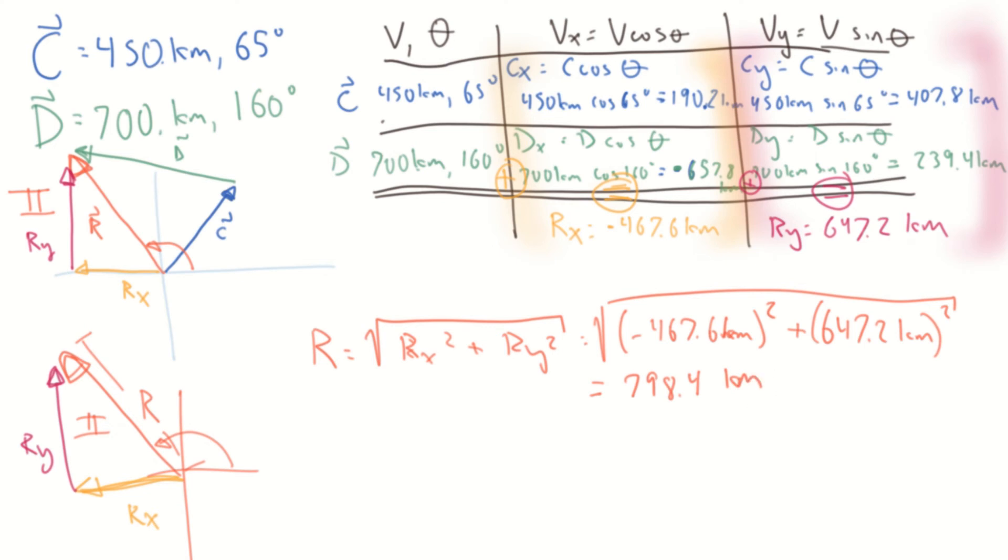When I solve this out, I get an answer for R of 798.4 kilometers. So my sketch looks like it was a little bit off. Well, maybe not too bad. It's a little longer than D. And maybe you can make the argument that my R vector is a little longer than D, but it's pretty close. So maybe the sketch isn't too bad on closer look.